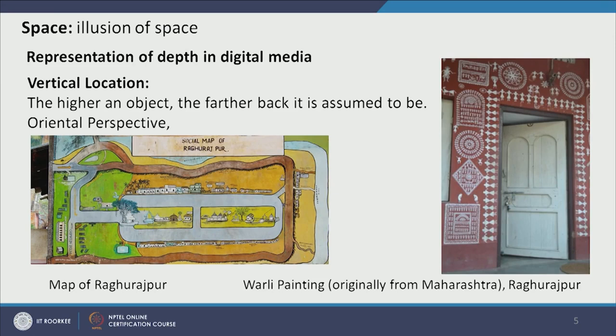Another way of creating a sense of space is vertically allocating different objects. On the right-hand side we have an Orli painting done in Raghurajpur, Odisha. In this painting we can see different formations of humans and animals on top of each other. The object appearing on top is actually farther away, and the object appearing at the bottom is actually nearer. On the right-hand side we can also see a map of the same place showing elevations of small buildings appearing on top of others, where buildings appearing higher are actually farther. This creates the sense of depth in a 2D composition.